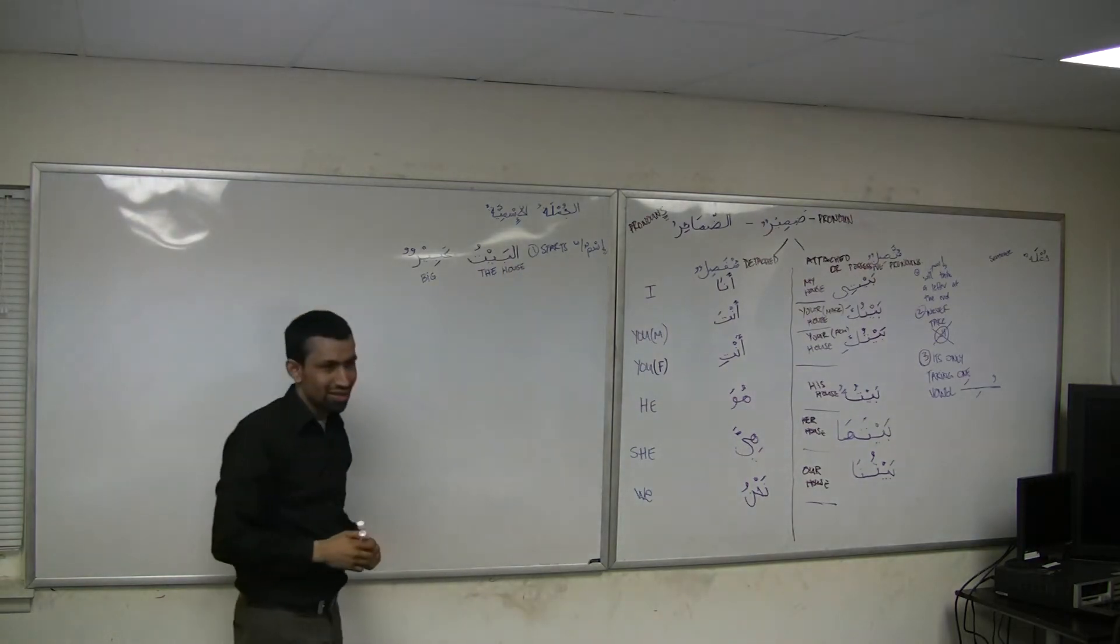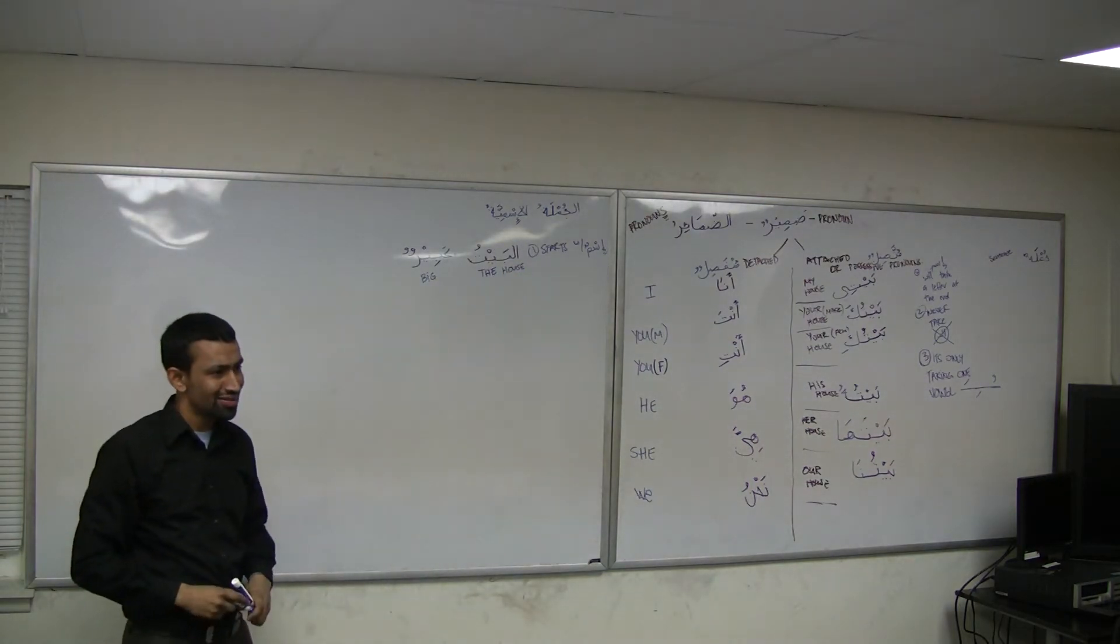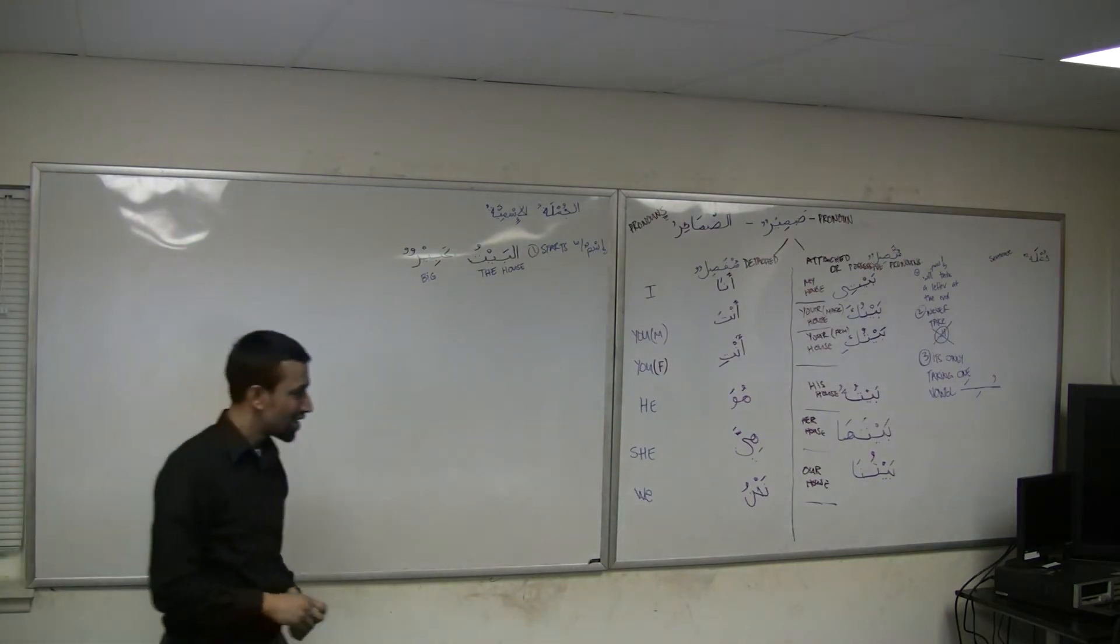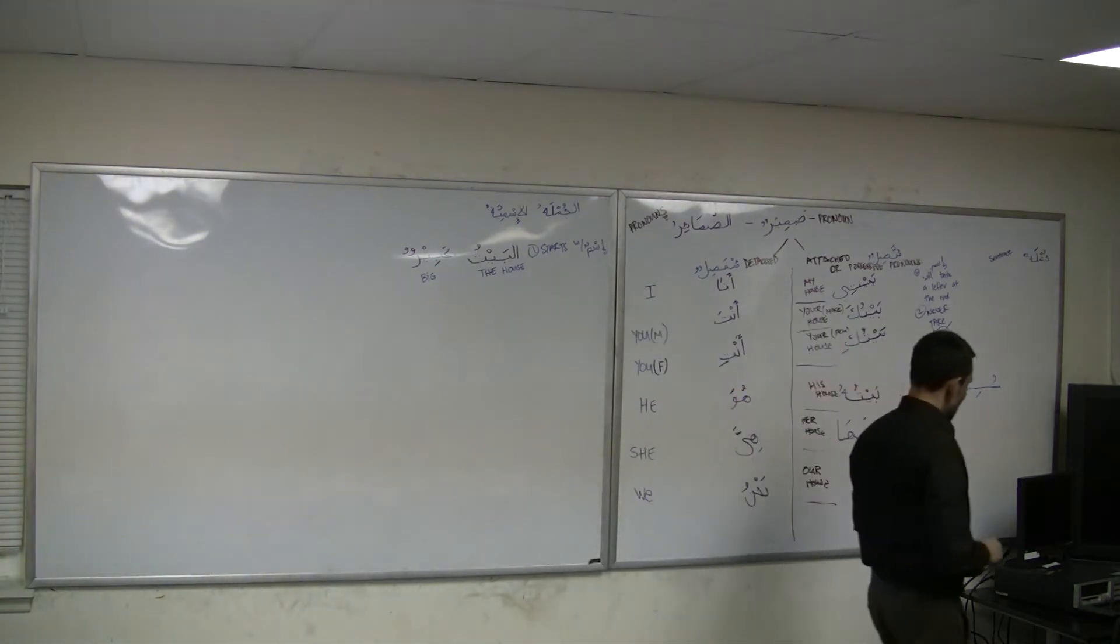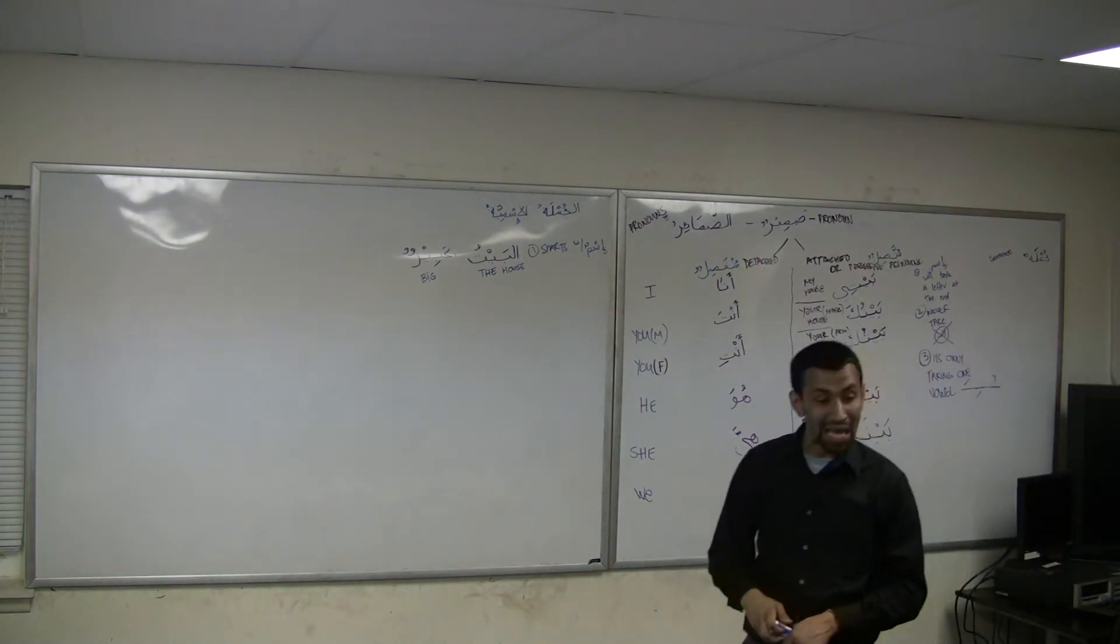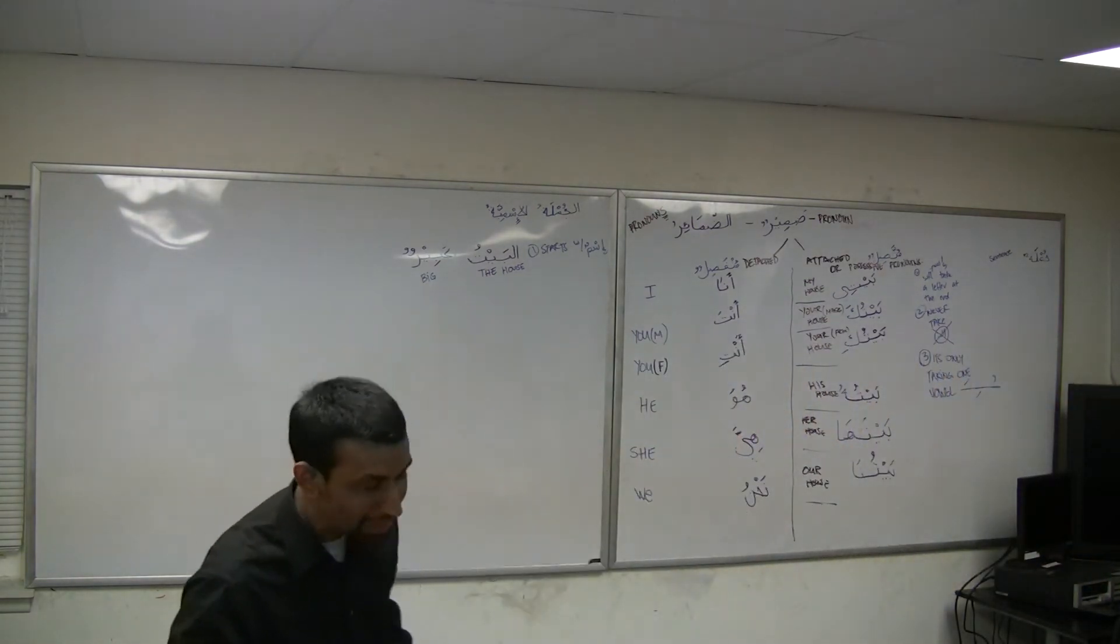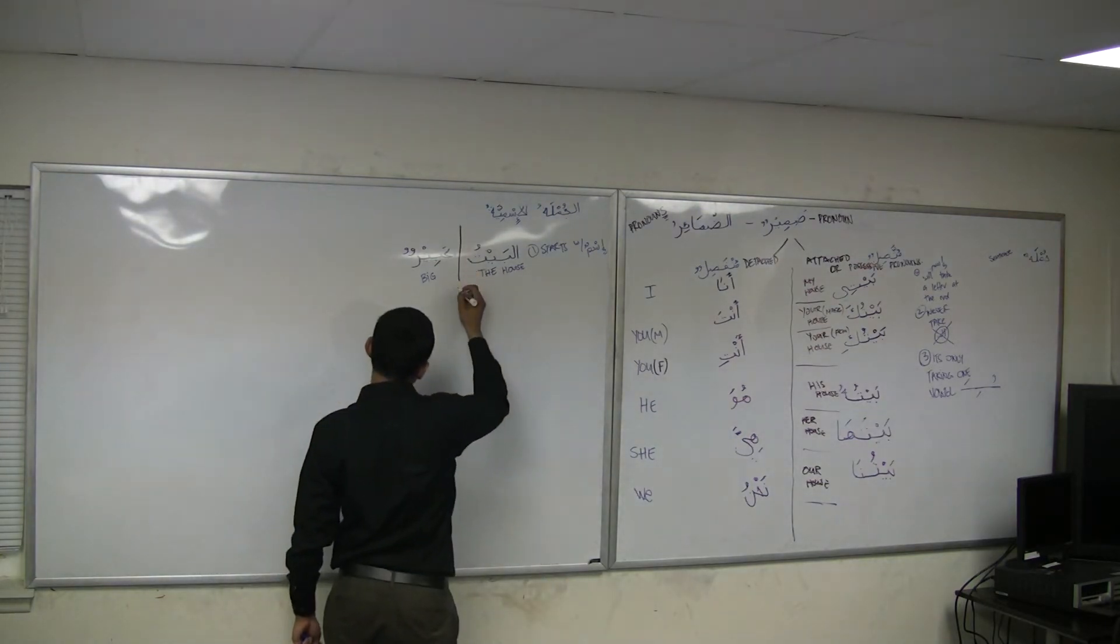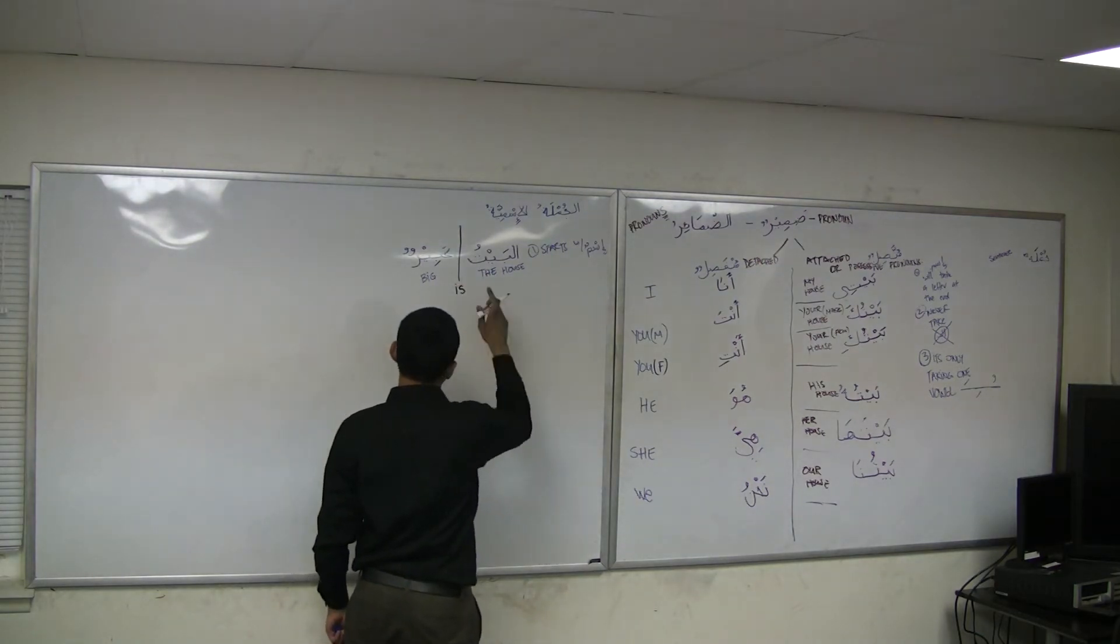Watch this: al-baytu, the house, kabirun, big. That type of sentence means the house is big. Where's 'is'? The word is or are is implied. It's in there - the house is big, it's implied.